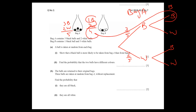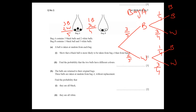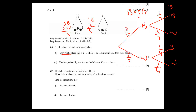For Bag B: the probability of black is one out of four, and white is three out of four. This is because the total in Bag B is four, and there is no connectivity from Bag A — they are completely independent events.